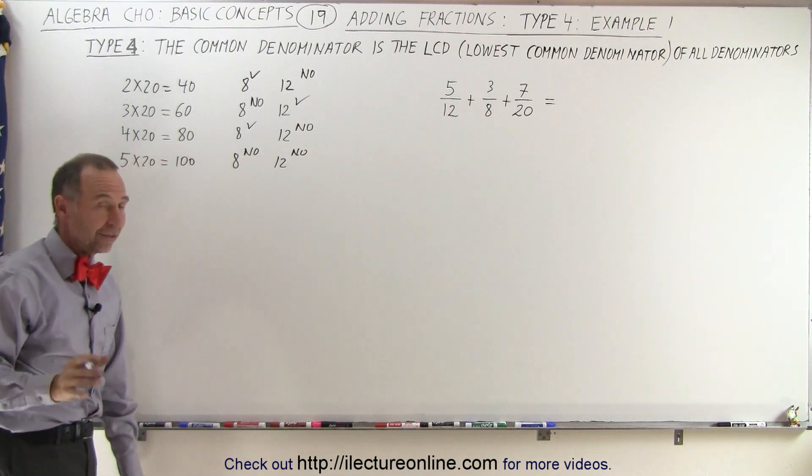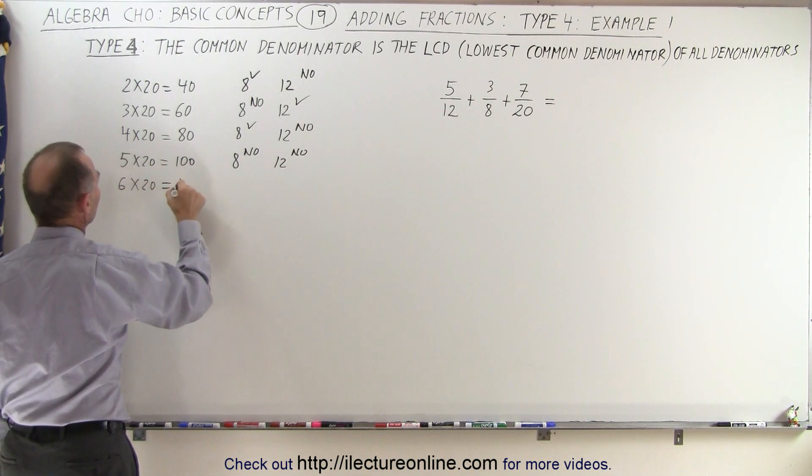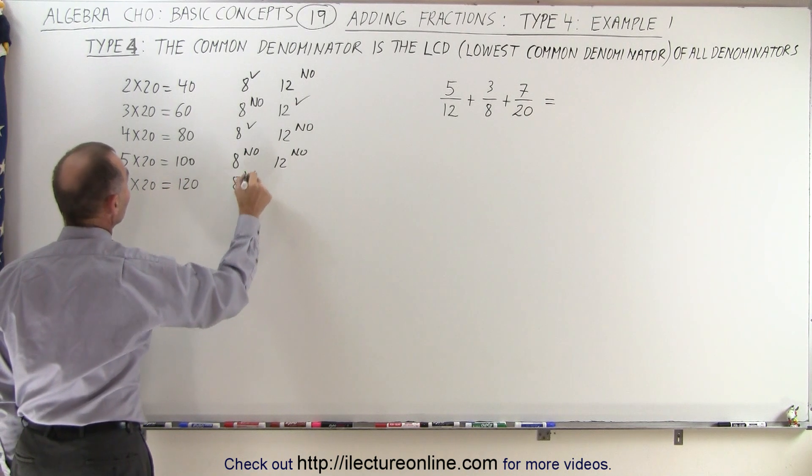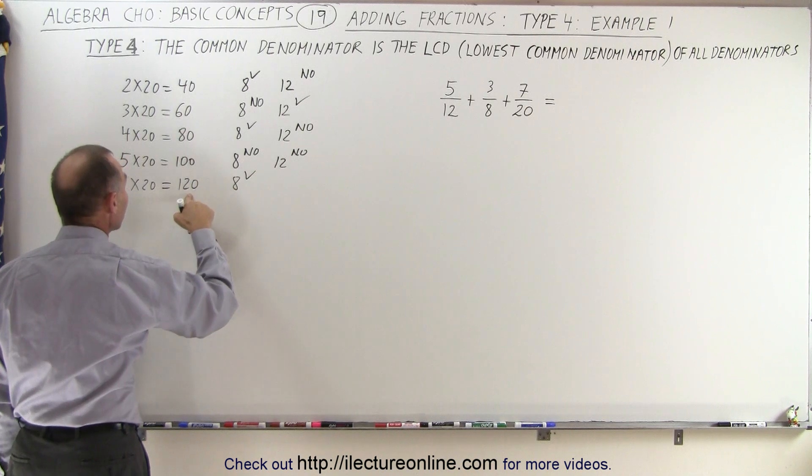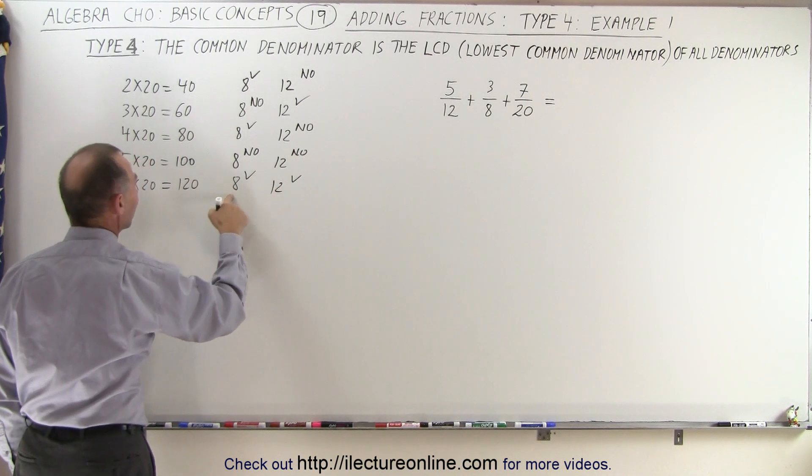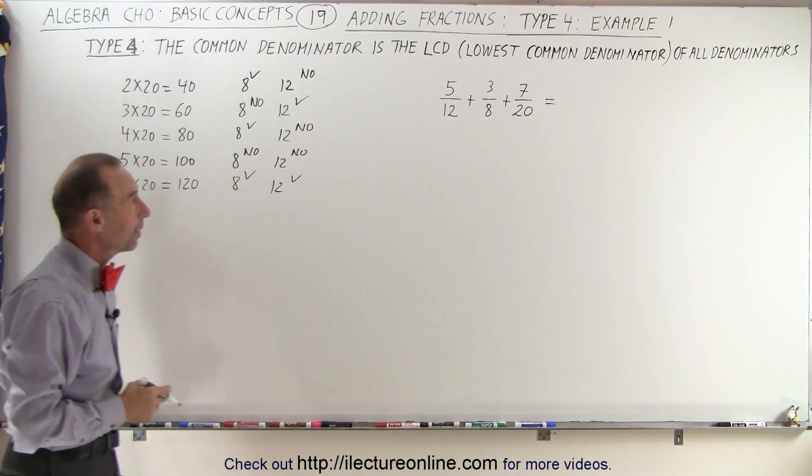How about 6 times 20? That's 120. Does 8 fit evenly into 120? And the answer is yes. Does 12 fit evenly into 120? And the answer is yes. Since both fit evenly into this, then that would become the lowest common denominator.